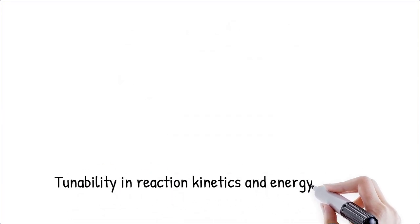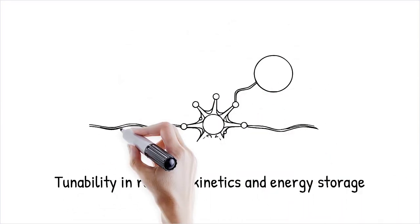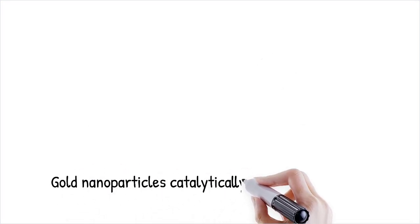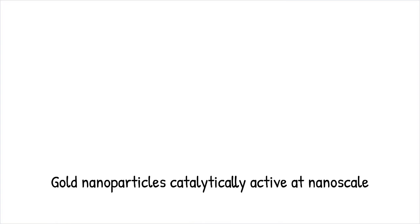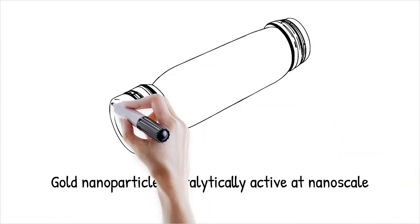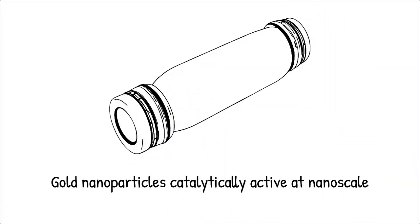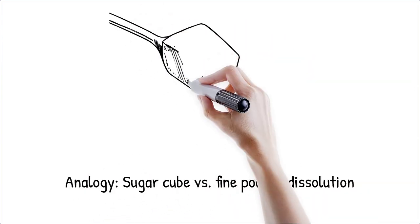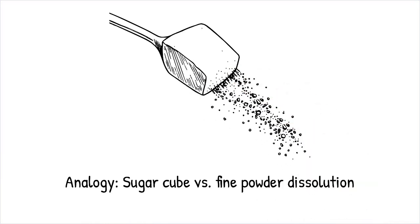Gold nanoparticles, which are chemically inert in bulk, become highly catalytically active at the nanoscale, enabling CO oxidation in catalytic converters. It's like chopping a sugar cube into fine powder. The more finely it's ground, the faster it dissolves in water.